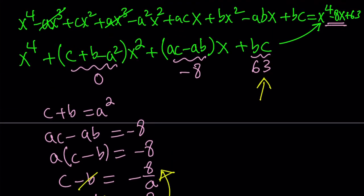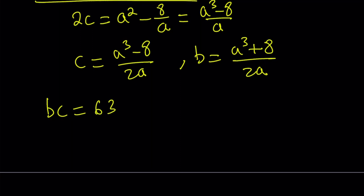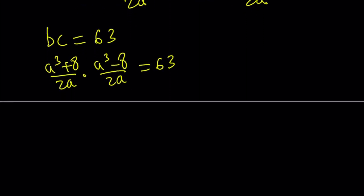Which is bc equals 63. Since I have b and c in terms of a, bc equals 63 is going to help out a lot. Now b is a cubed plus 8 over 2a. And c is a cubed minus 8 over 2a. This equals 63.